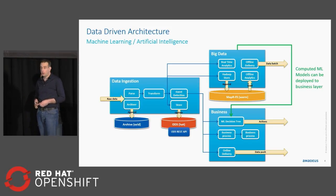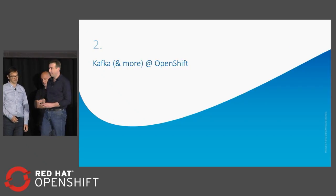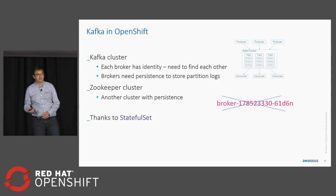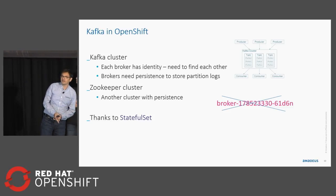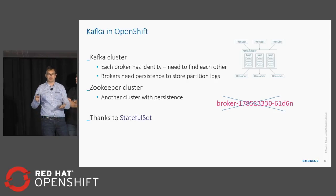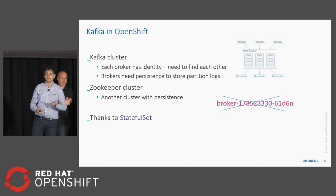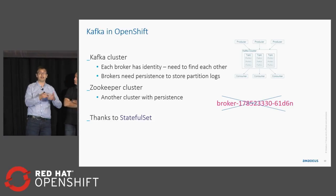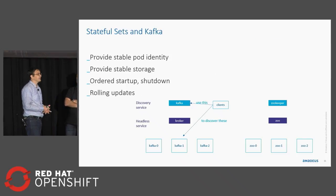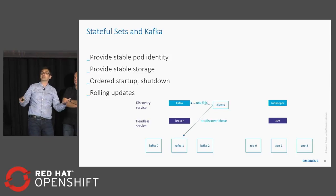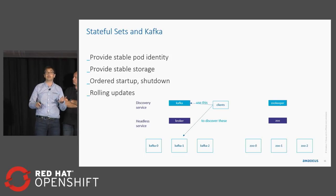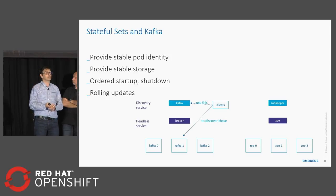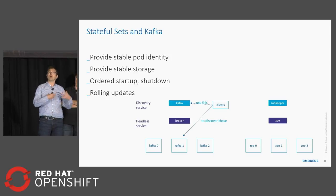Now for the implementation part of Kafka on OpenShift: how do we run architectures like this? Kafka and OpenShift didn't fit very well some time ago because Kafka is a stateful application — every broker has a unique identity, you need persistent storage, and you need another cluster which is ZooKeeper. In OpenShift you would get random-ish pod names. Thankfully we now have StatefulSets — when we started they were called PetSets and were in beta, but they are supported now. StatefulSets provide stable pod identity, so our Kafka brokers can have correct names like kafka-0, kafka-1, kafka-2. They provide stable storage for a given pod even if it moves, plus ordered startup, ordered shutdown, and rolling upgrades.